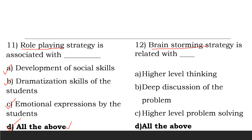Brainstorming strategy is related with dash. The options are higher level thinking, deep discussion of the problem, higher level problem solving, all of the above. The answer is all of the above — higher level thinking, deep discussion of the problem, and higher level problem solving are all related to brainstorming strategy.